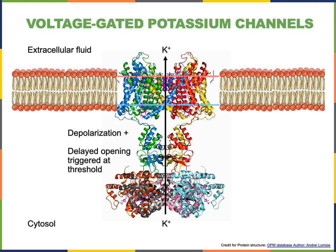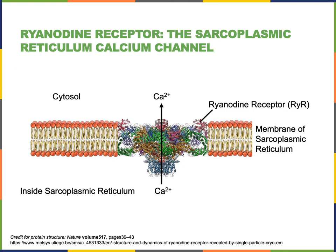Here we see the structure of the voltage-gated potassium channels that open allowing potassium to flow out of the cell during the plateau phase of the contractile cell action potential and during the falling phase. These channels are responsible for repolarization as well as the relative refractory period.